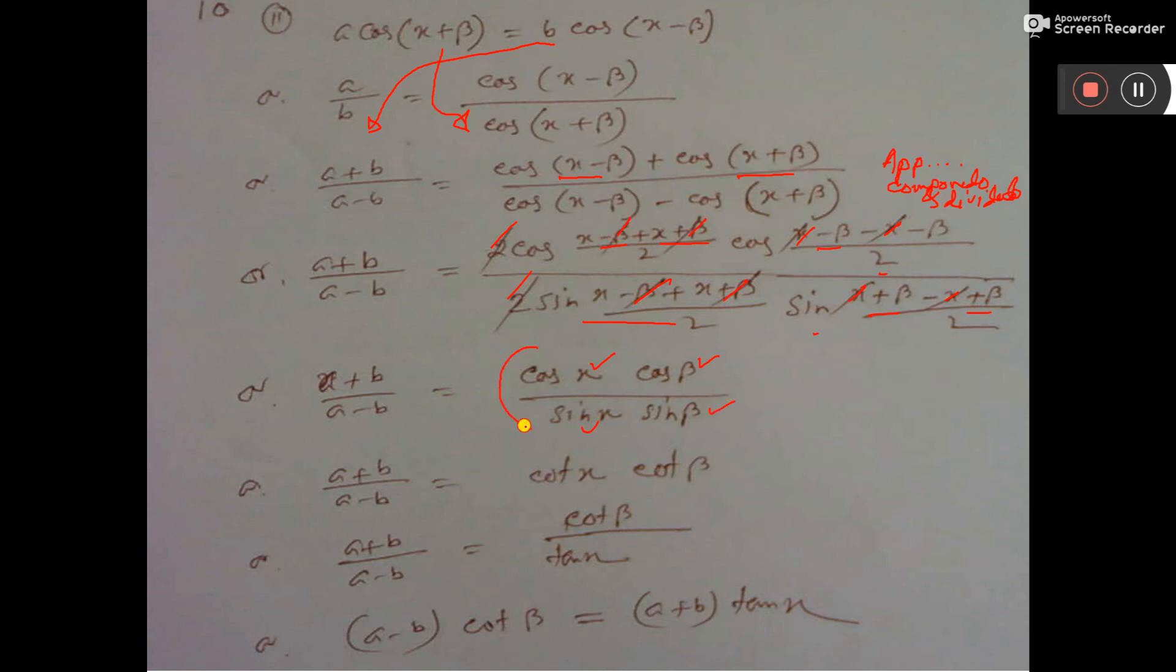Now cos by sin, that is cot x. Cos by sin, that is cot β. Now, cot means 1 by tan. Now if you just cross multiply, then (A-B) into cot β is equal to (A+B) into tan x. So the proof has come. That's all.